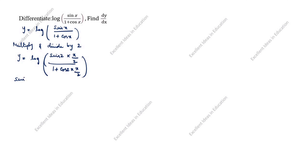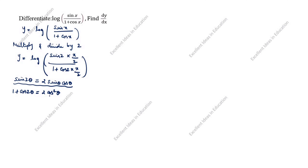Next step: what is the formula of sin 2 theta? It is 2 sin theta cos theta. And 1 plus cos 2 theta is equal to 2 cos square theta. In this formula, sin 2(x by 2) — here x by 2 is theta — so we write 2 sin(x by 2) cos(x by 2). In the denominator, 1 plus cos 2 theta becomes 2 cos square(x by 2).